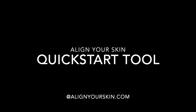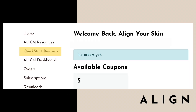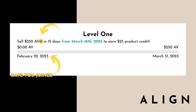Hey everyone, let's go over your new Quick Start tool. When you log in, you'll see on the left-hand side menu 'Quick Start Rewards.' In that tab, you're going to be able to see everything you need related to your Level 1, Level 2, and Level 3 Quick Start goals, including the date you joined.